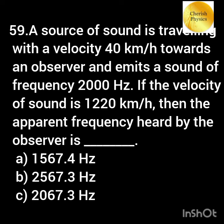A source of sound is traveling with a velocity of 40 kilometers per hour towards an observer and emits a sound of frequency 2000 hertz. If the velocity of sound is 1220 kilometers per hour, then the apparent frequency heard by the observer is?